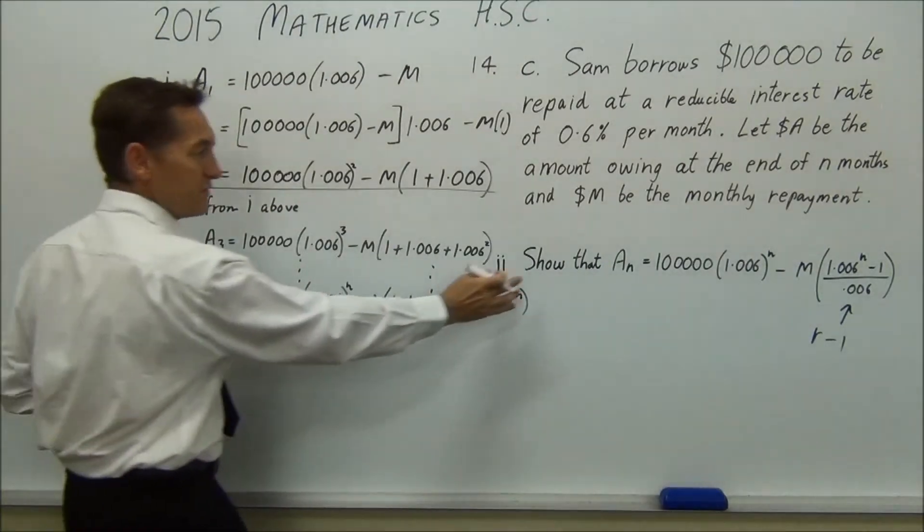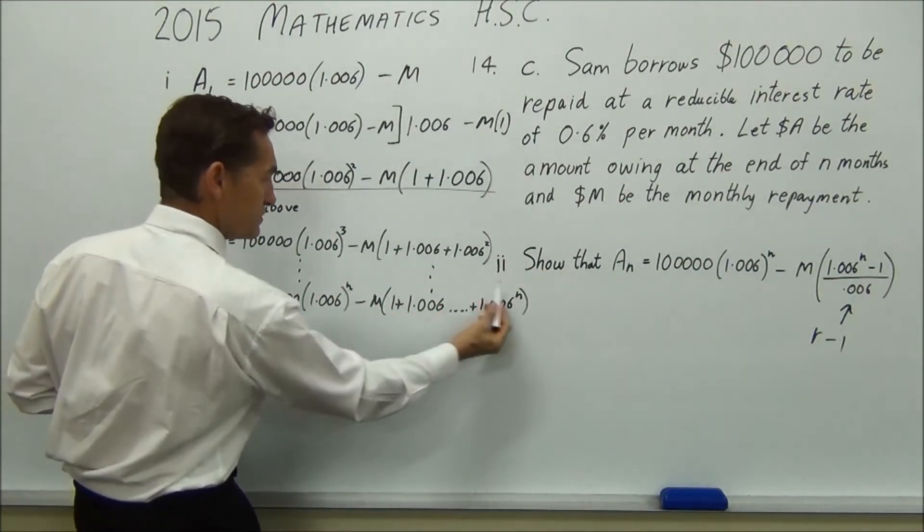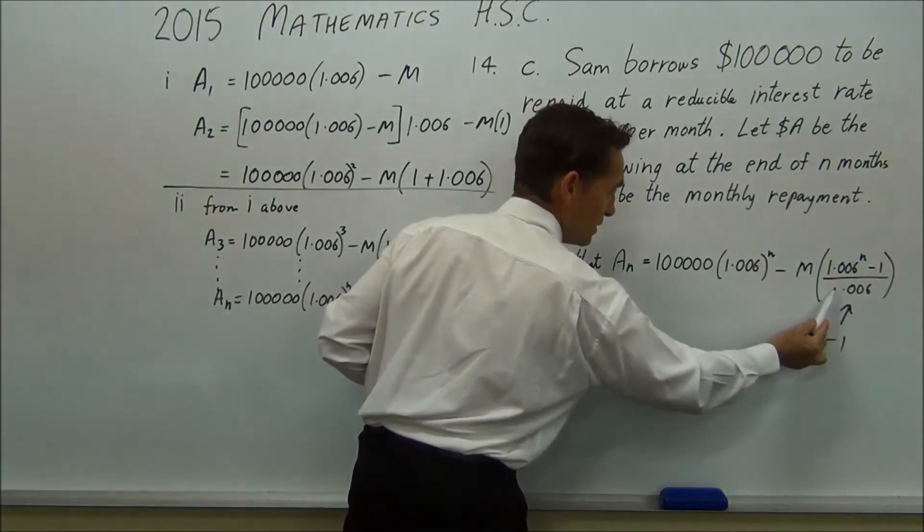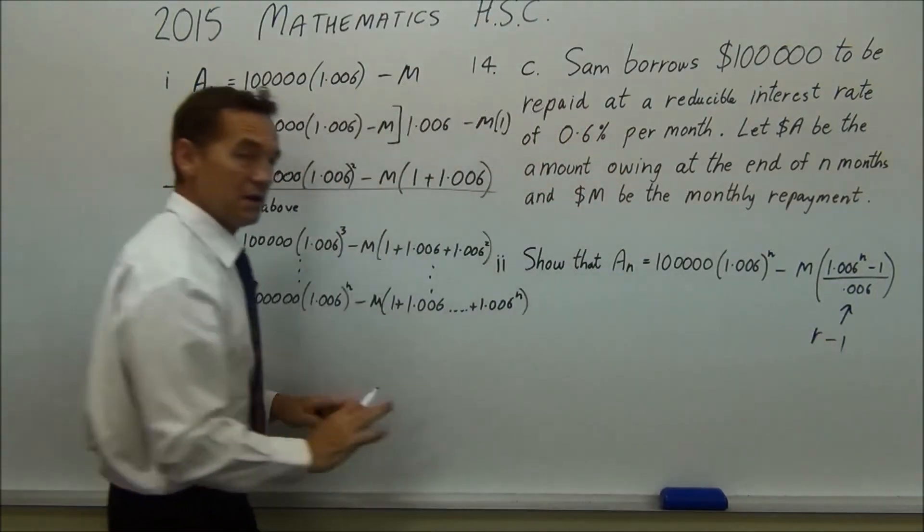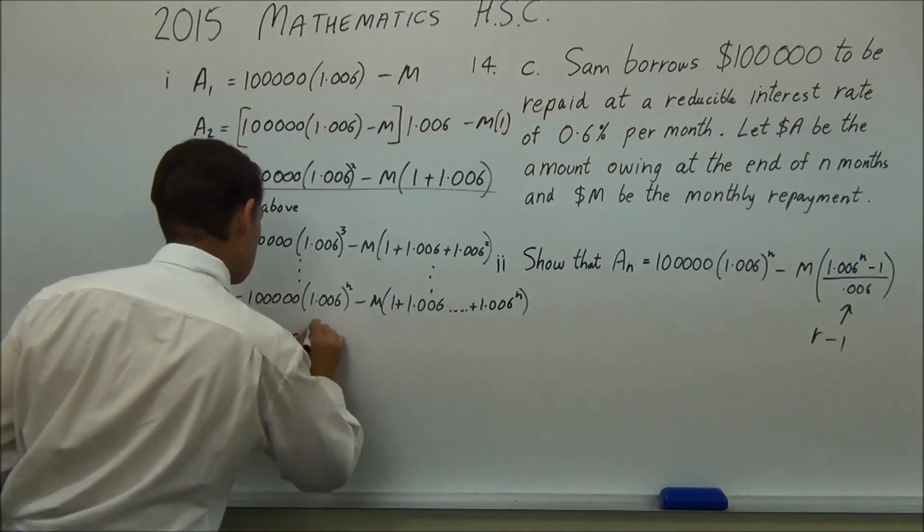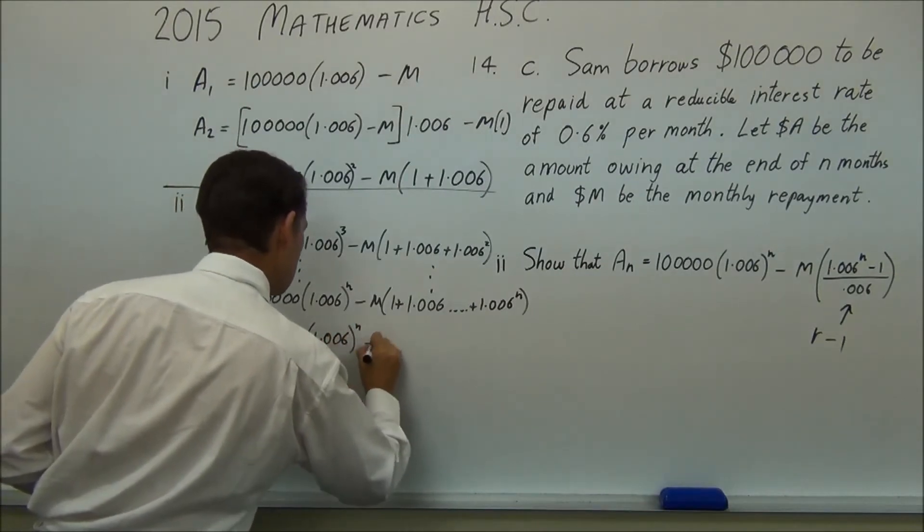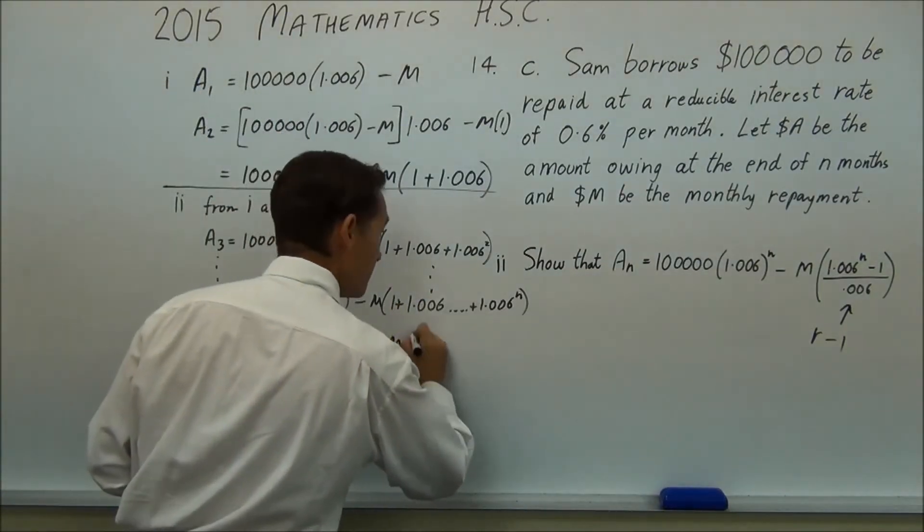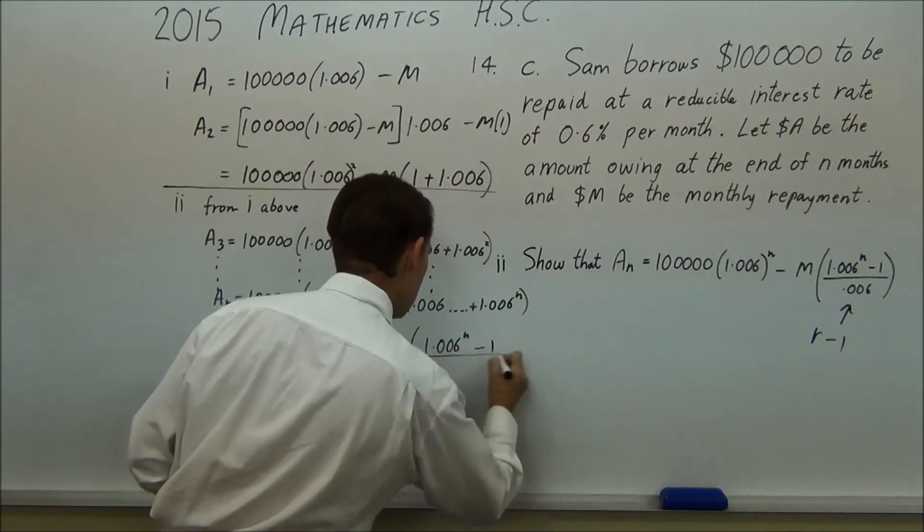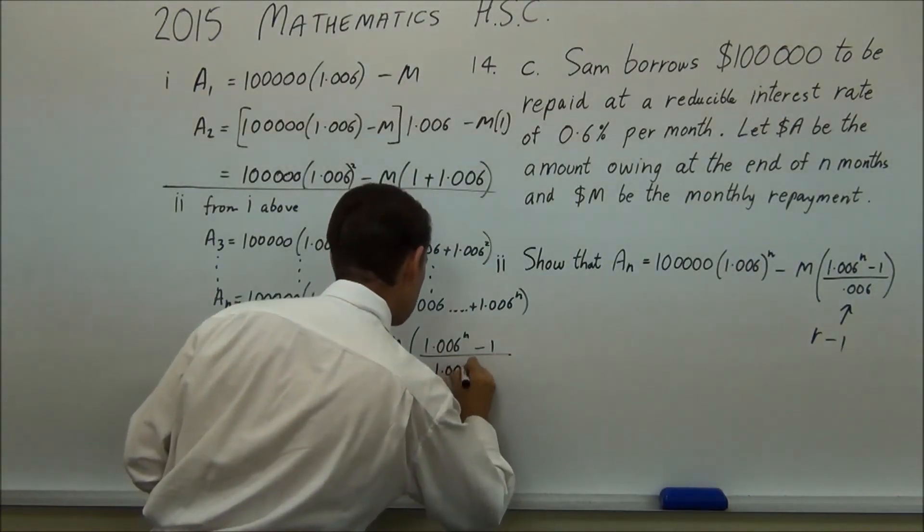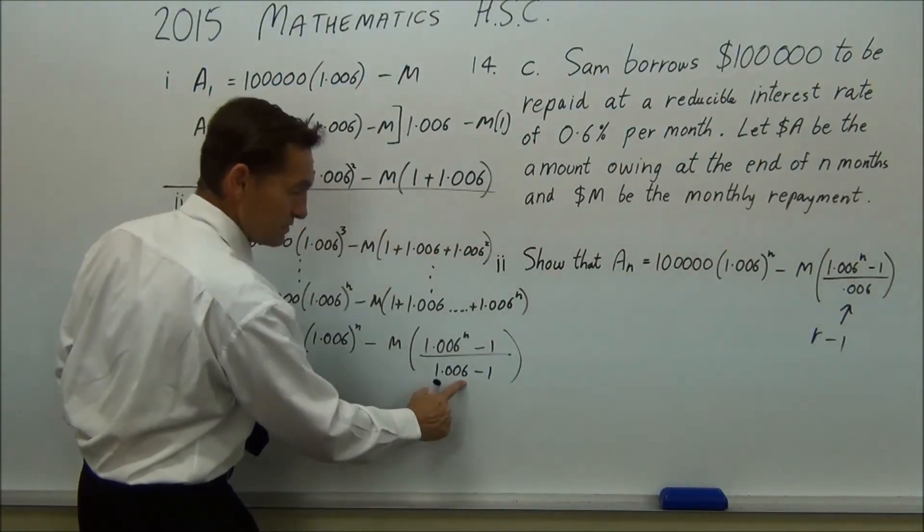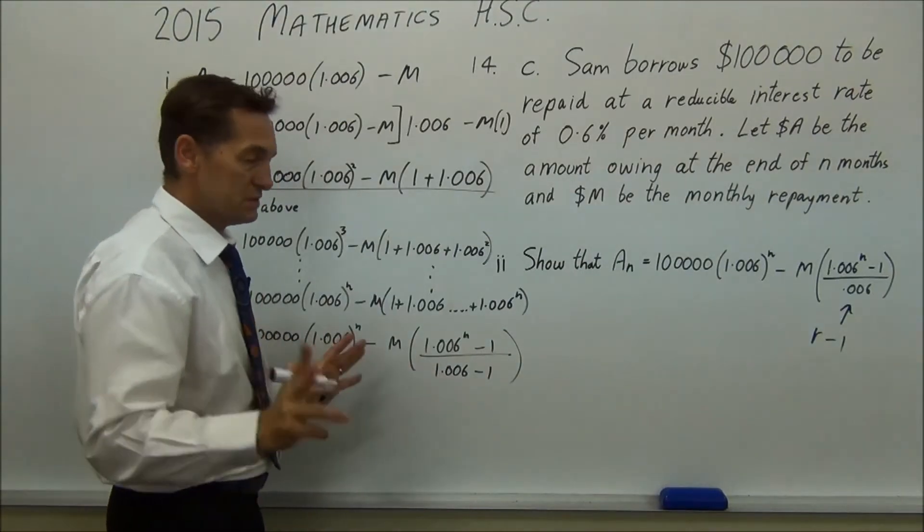continue it down to get my second part and then the only thing you've got to do is translate this into that which you can just about do identically except down the bottom I just write r minus 1, so 1.006 minus 1 down the bottom and that's it. I would say that's all the examiners are looking for. So then that equals 100,000 times 1.006 to the N, minus minus, and you've got M, 1.006 to the N, minus 1, over 1.006 minus 1. So I think the examiners would look for that, this, just that little change there to show that you know it's the sum of an arithmetic series.